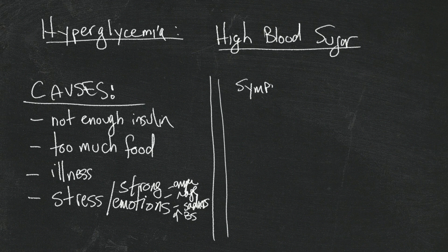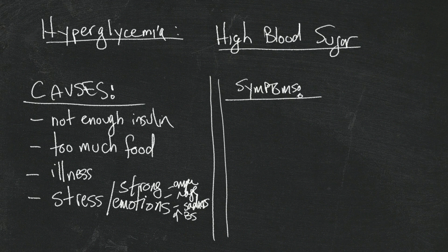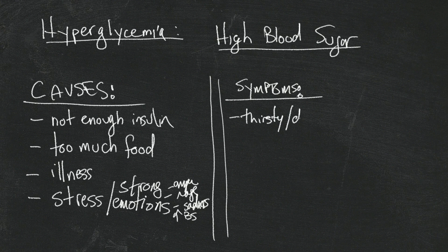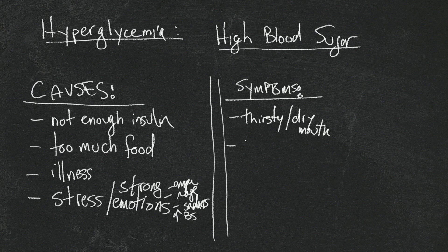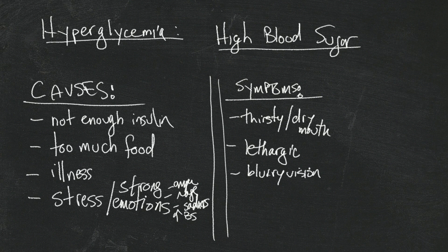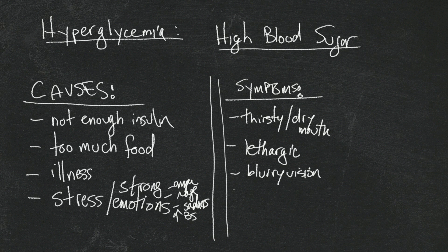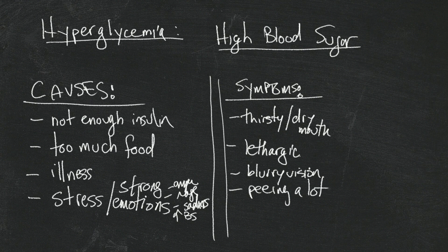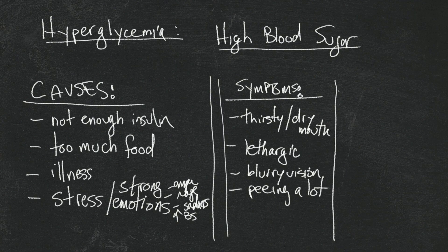All right, those are some of the causes. What are some of the symptoms of high blood sugar? Well, they're similar to what you felt when you first got diagnosed when your blood sugars were really high. You can feel thirsty or dry mouth. You can feel lethargic - which you can also feel when your blood sugar is low, that's why it's important to check. You can have blurry vision. What ends up happening is that as your blood sugar goes up, it dilates things in your eyes in such a way that you could become - have a lot of watery vision.